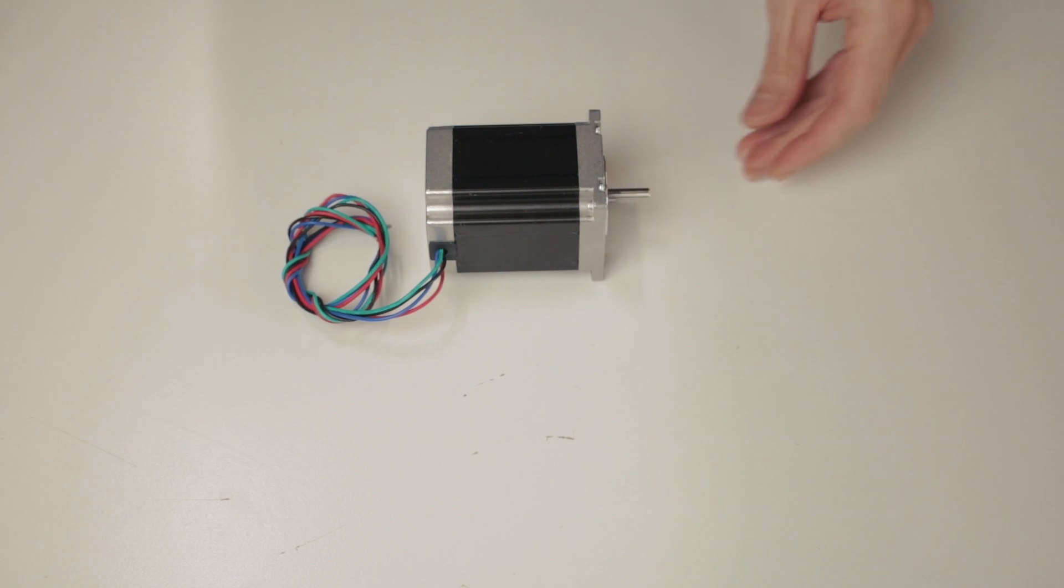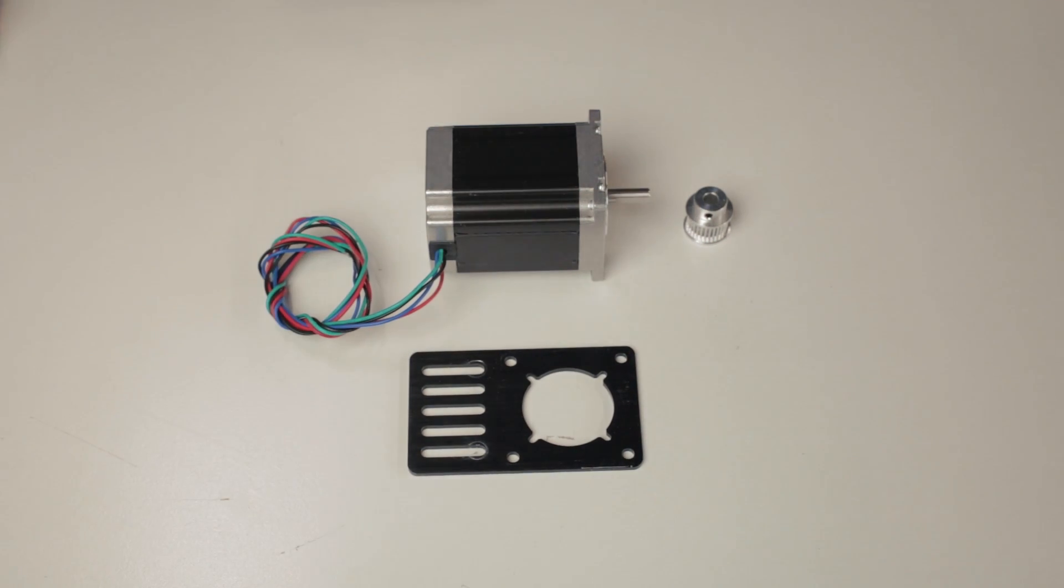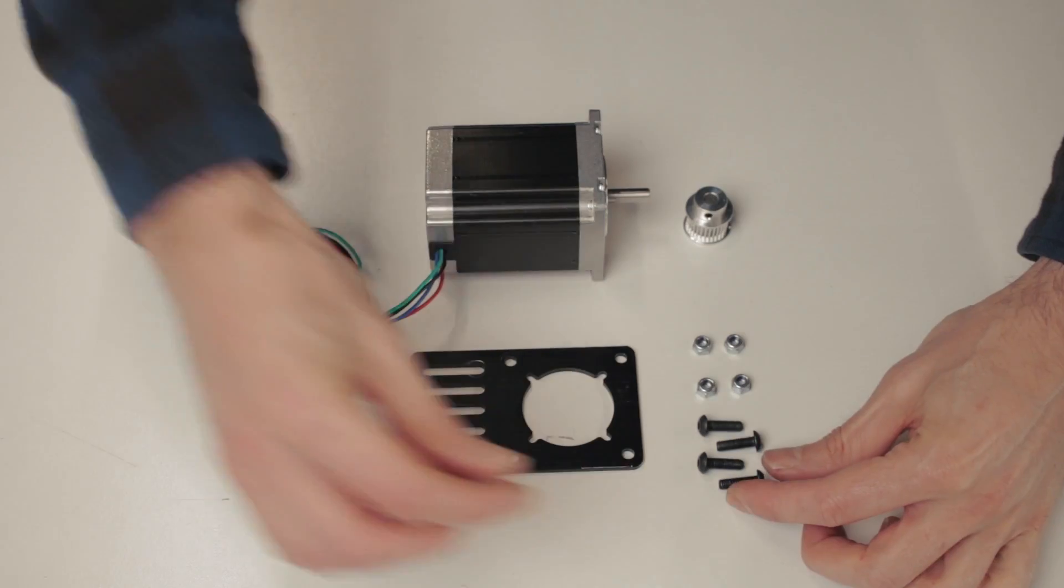Okay, so now on to the powered Z-axis. Now, this isn't necessary, but it's a cool little feature. So I've got a NEMA 23 stepper motor, a timing pulley, mounting plate, and some M5 nuts and bolts.